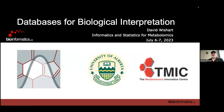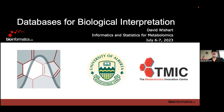This talk is about databases for biological interpretation. There are really two types of interpretation in metabolomics. One is the multivariate statistical approach — the same thing you do in proteomics, transcriptomics, and genomics. You have lots of data and lots of parameters and you need to use advanced statistics, but that's only one part. The other part is to actually understand the biology. Getting nice clusters, heat maps, or network diagrams doesn't tell you about the biology.